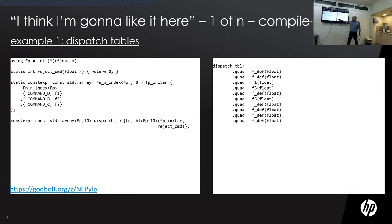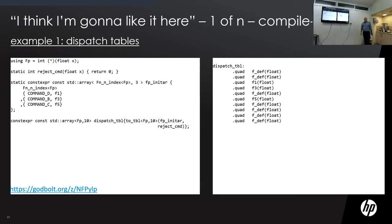When I write the initialization table like this, after compilation I get the table I wanted — as a constexpr, stored in flash. This is something I couldn't do in C. Even with static const on the C side you couldn't generate it the same way.